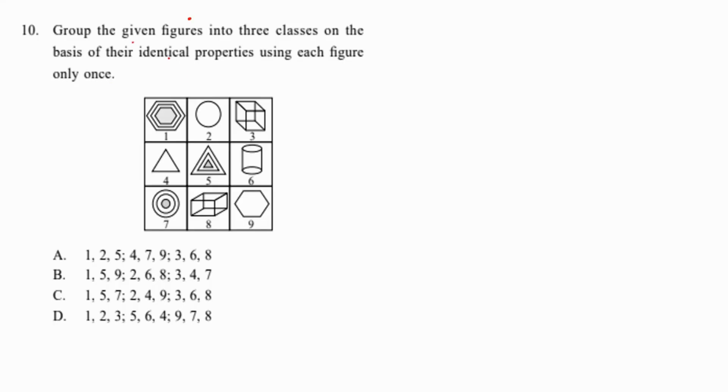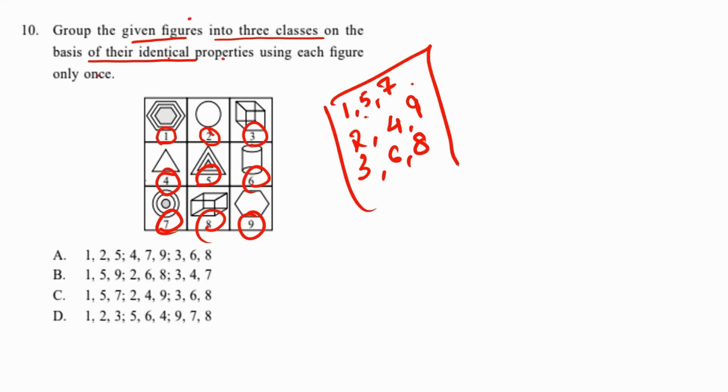This is a figure matrix. Group the given figures into three classes based on their identical properties. One, five, and seven form a pattern with the same figure three times, one inside the other. Two, four, and nine are simple 2D shapes. Three, six, and eight are 3D figures. These are the three different categories found in option C.